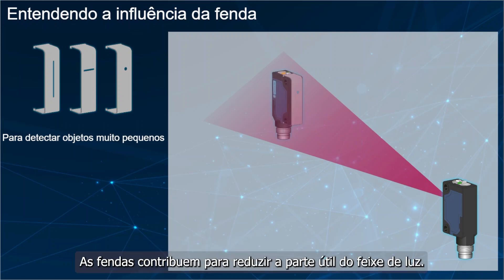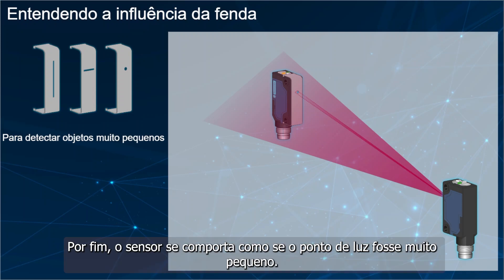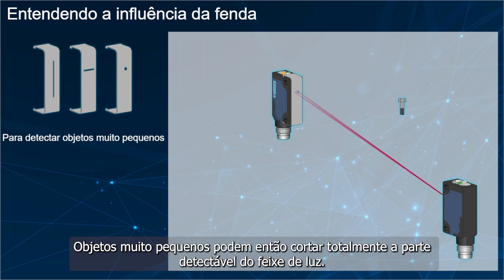The slits contribute to reduce the useful part of the light beam. Finally, the sensor behaves as if the spot was very small. Very small objects can then totally cut the detectable part of the light beam.